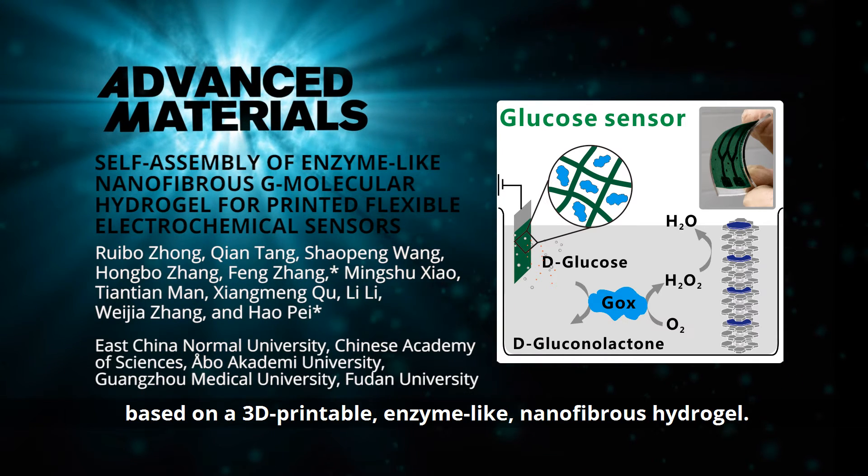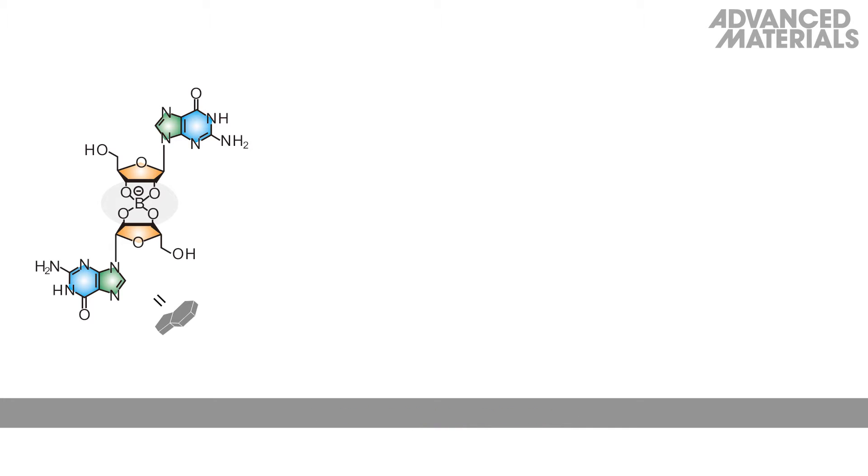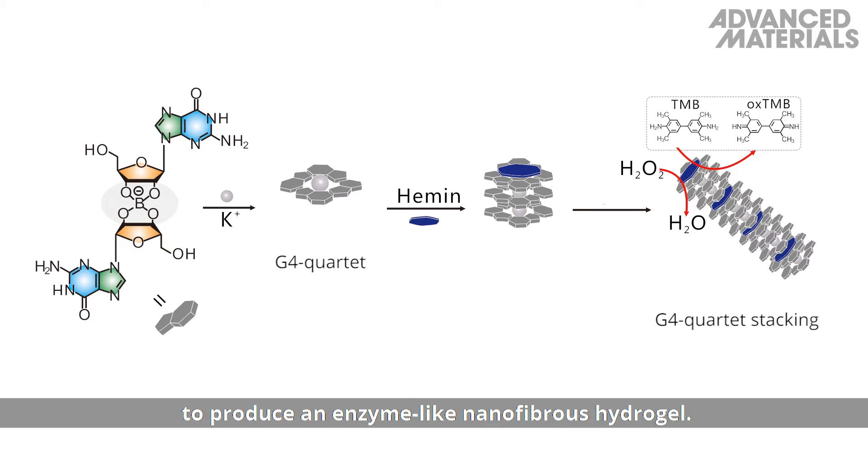Cation-templated assembly of G-boronate diesters formed a G-quartet motif that could be stacked in the presence of hemin to produce an enzyme-like nanofibrous hydrogel.